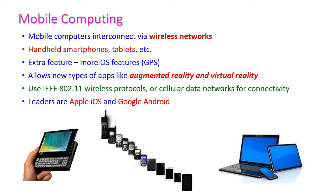The second type is mobile computing. Here, computers are interconnected through wireless networks. Examples of mobile computers include handheld systems, mobile phones, and laptops. In mobile computing, the OS has extra features — for example, GPS (Global Positioning System), which allows us to easily identify the location of the system wherever we go.